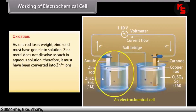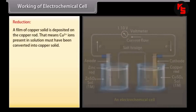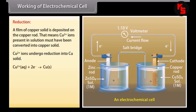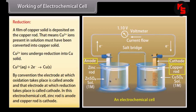Working of electrochemical cell. Oxidation: as the zinc rod loses weight, zinc solid must have gone into solution. Zinc metal does not dissolve as such in aqueous solution; therefore it must have been converted into zinc ions — zinc undergoes oxidation into zinc ions. Reduction: a film of copper solid is deposited on the copper rod, meaning copper ions present in solution must have been converted into copper solid — copper ions undergo reduction into copper solid. By convention, the electrode at which oxidation takes place is called the anode, and the electrode at which reduction takes place is called the cathode. In this electrochemical cell, the zinc rod is the anode and the copper rod is the cathode.